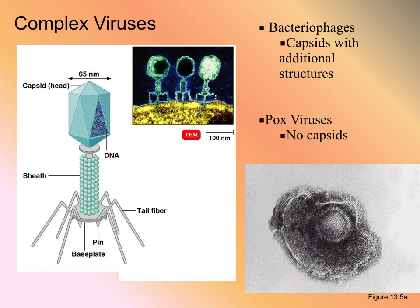Bacteriophages are sometimes referred to as complex viruses. I like to use the term 'phage' to keep bacteriophages separate from animal viruses. Although they have many similarities, they have a lot of differences. Bacteriophages are specific to bacteria, while viruses are specific to eukaryotic cells — animal and plant cells. Make sure when reading exam questions that you pay attention to whether you're being asked about a phage or an animal virus.